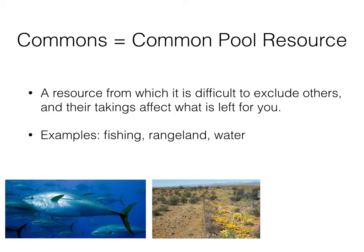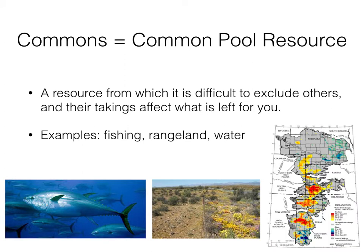Fishing. Rangeland — you can see here the effects of overgrazing on the left. And here's the Ogallala Aquifer, a large underground lake covering several states. The colors represent how much water is increasing or decreasing in the aquifer, and the orange, red, and yellow reflect decreasing. This is a body of water from which it's difficult to exclude others, and it is currently being pumped dry, affecting how much is left for other people to take.